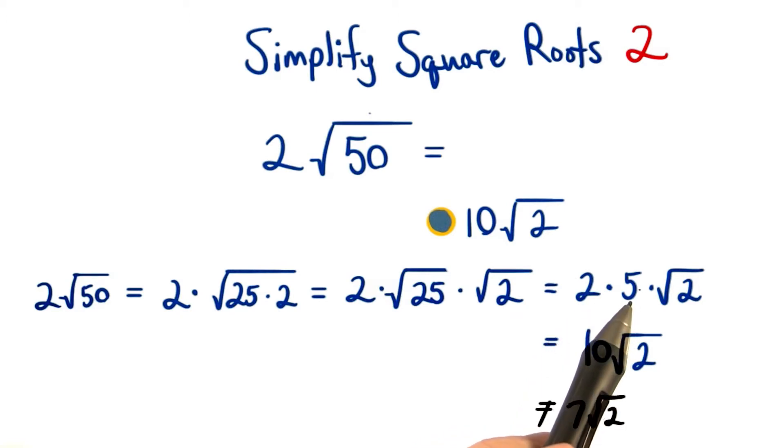We don't want to add these numbers together since multiplication was really between the radicals and the numbers to begin with. So that's why the answer wasn't 7 root 2.